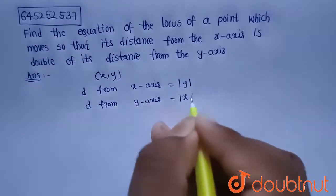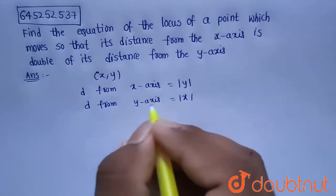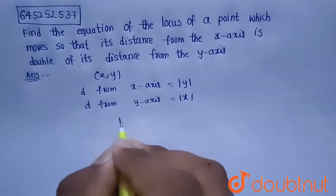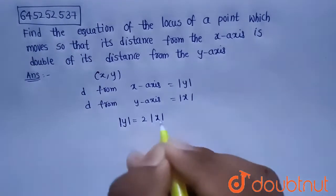Given the distance from x-axis is double of its distance from y-axis. So from this, |y| equals 2 times |x|.